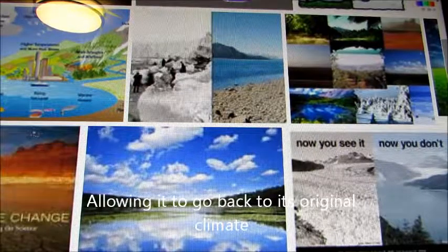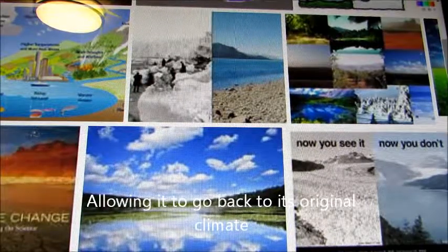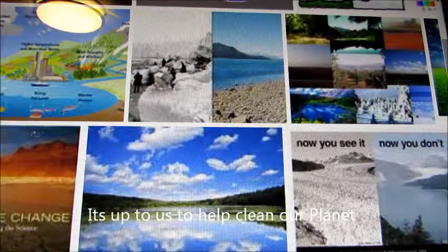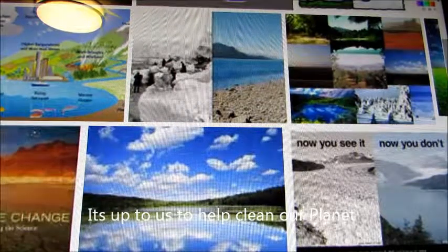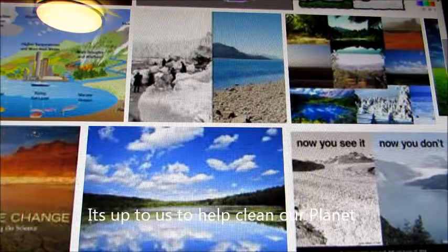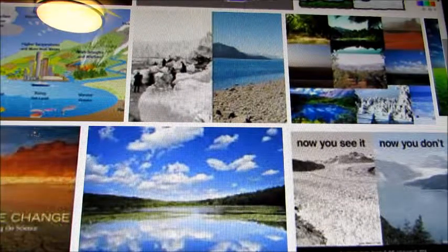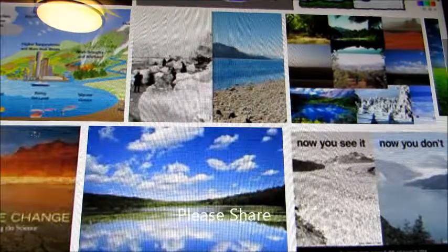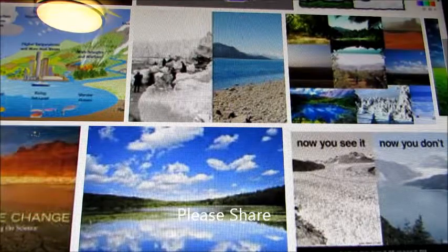We take what I call the blanket off our planet. Taking that blanket off the planet is going to allow the climate to go back to the way it should be, because we added all the pollution into the atmosphere.